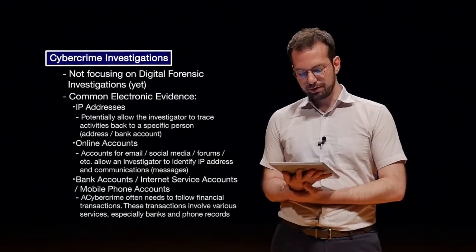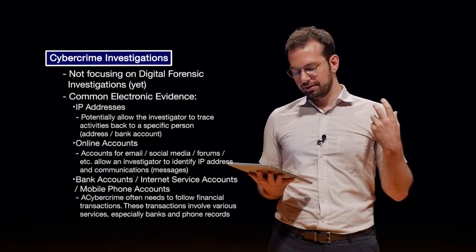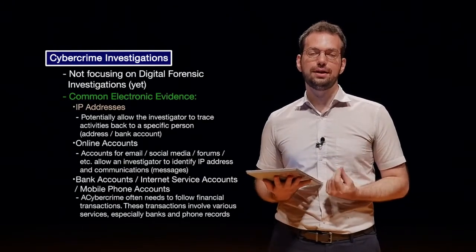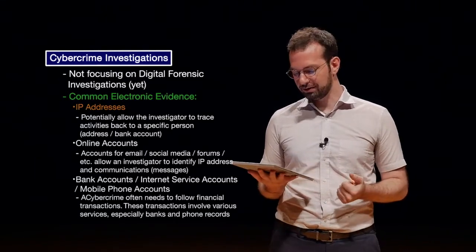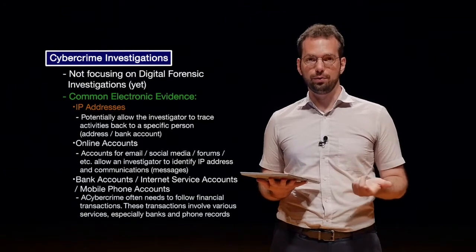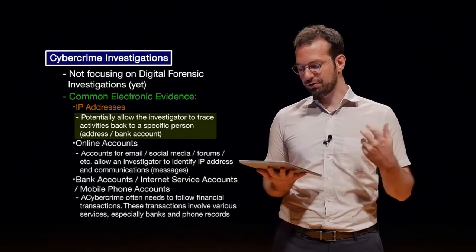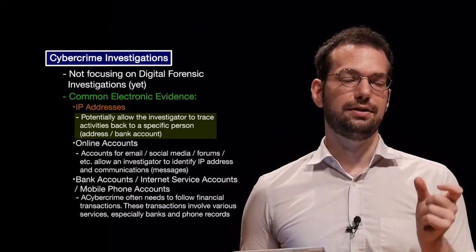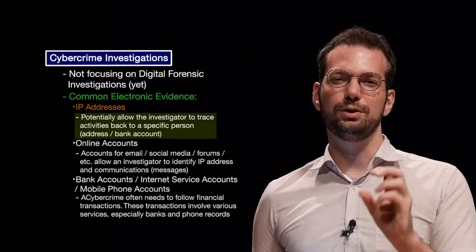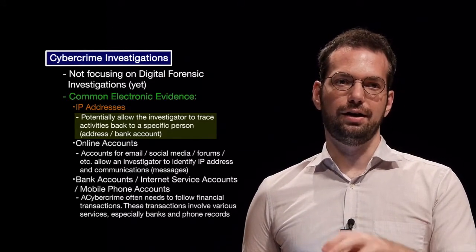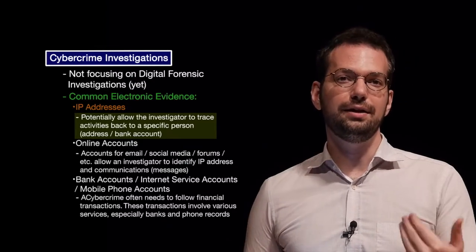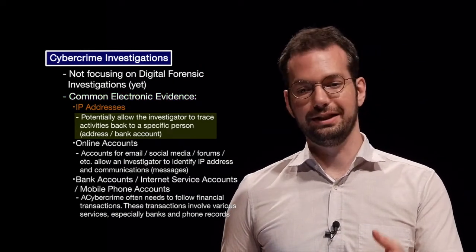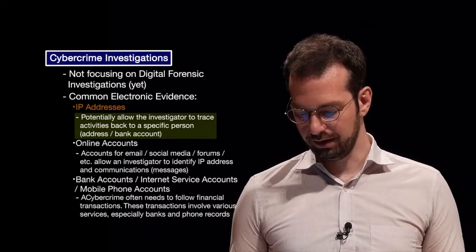In cybercrime investigations, some very common types of electronic evidence include IP addresses — internet protocol addresses — which are probably the most common type. IP addresses potentially allow the investigator to trace activities back to a specific person, for example an address or a bank account. If we have an IP address, that's the starting point that lets us know location. Once we know location, we may be able to find account information, which may lead us to the actual person behind that account.